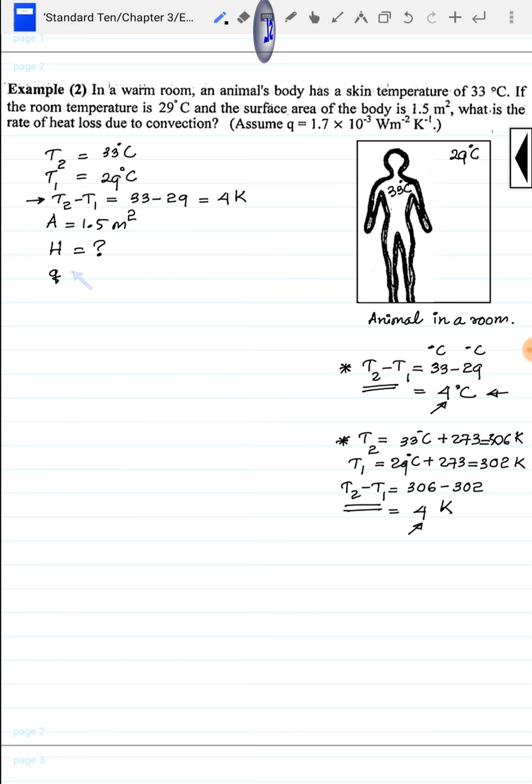The convection constant is 1.7 into 10 power minus 3 watt per meter squared per Kelvin. So h equals q divided by A times (T₂ minus T₁).